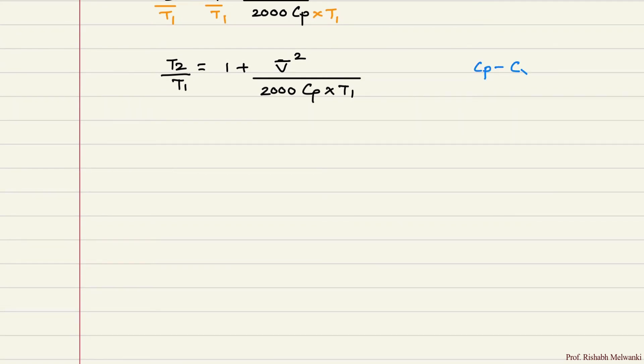Cp minus Cv is R, the characteristic gas constant. Take Cp common. So Cp in bracket 1 minus Cv upon Cp equal to R.